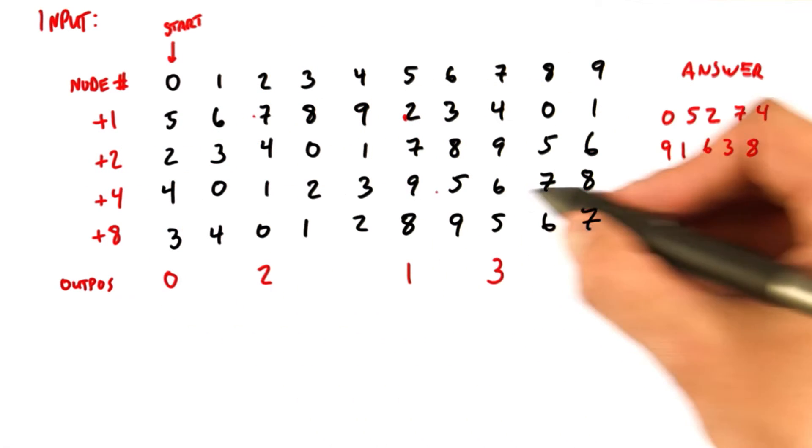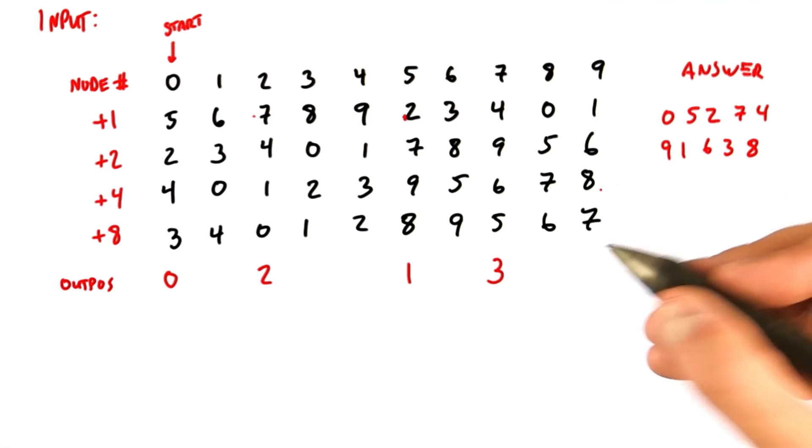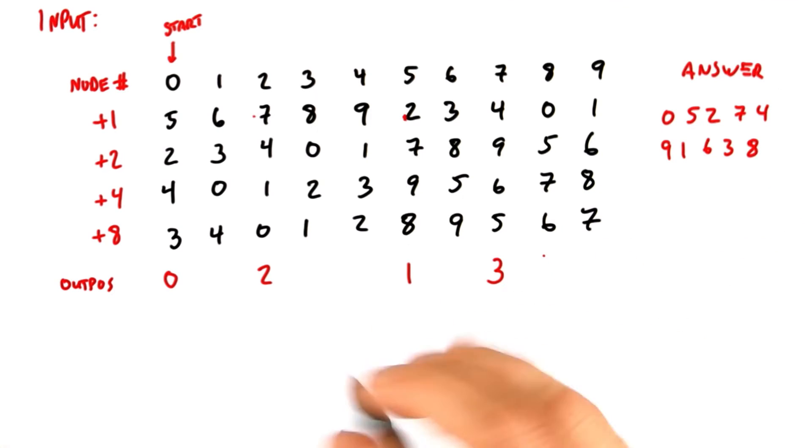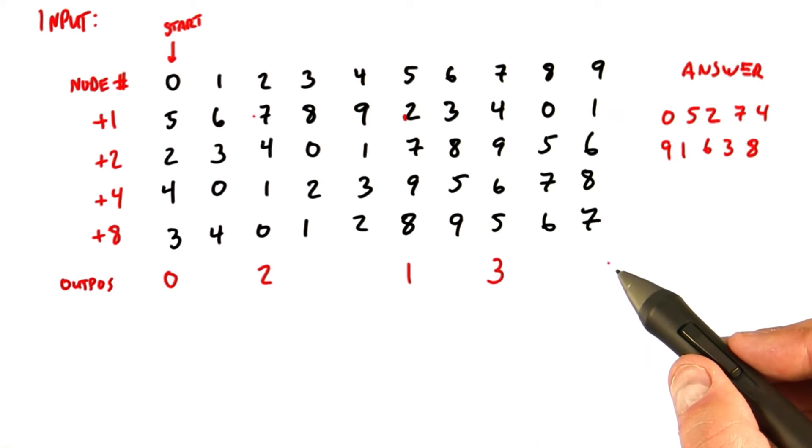On the next iteration, we're going to use the next line of the array, the plus 4 array. And each of the four awake nodes from output positions 0, 1, 2, and 3 will wake up the node that's four hops away. This will allow us to fill in four more values into the outpause array.